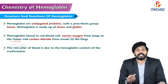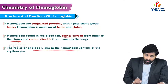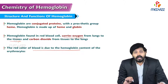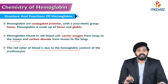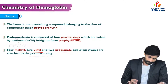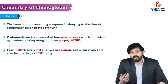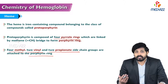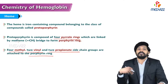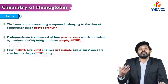The function of hemoglobin is to carry oxygen from the lungs to the tissues, and at the same time carry carbon dioxide from the tissues to the lungs. The red color of the blood is due to hemoglobin, which contains iron. Coming to heme, the non-protein part, it is an iron-containing compound belonging to the class of compounds called protoporphyrin.